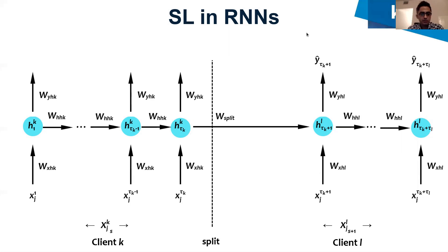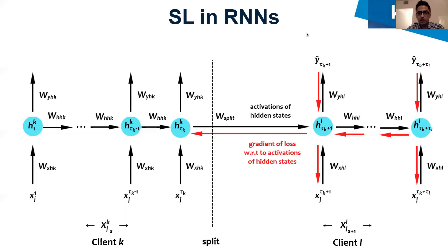The left side sub-network at client K performs forward propagation using XJSK and sends activations of the split layer to client L. Client L performs forward propagation and sends gradients of the loss with respect to the activations of hidden states back to client K. Client K then performs backward propagation. In this way, both sub-networks perform forward and backward propagation and update their weights using their local training segments without sharing segments between each other.